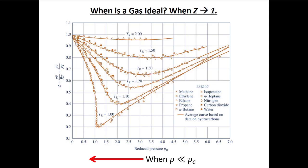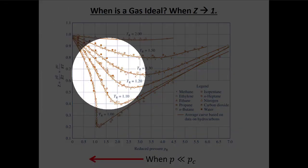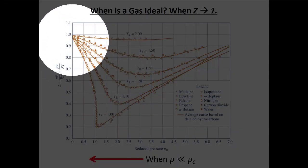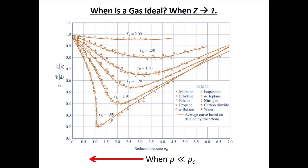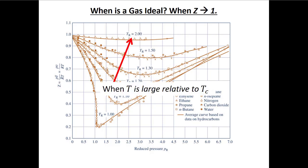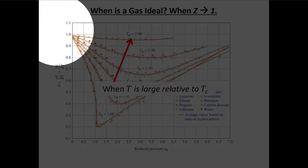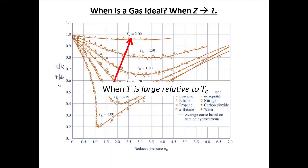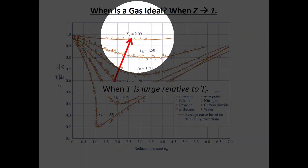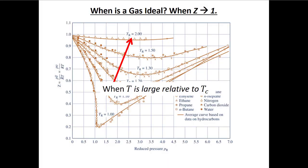The first case is if our reduced pressure — pressure divided by critical pressure — is low. If our pressure is much lower than the critical pressure, we get close to Z equals one. The other case where we can use the ideal gas law is if our temperature is very high compared to the critical temperature. As we get higher reduced temperature, the dip that takes us away from one gets smaller and smaller, and if we're twice the critical temperature the compressibility factor is always around one.